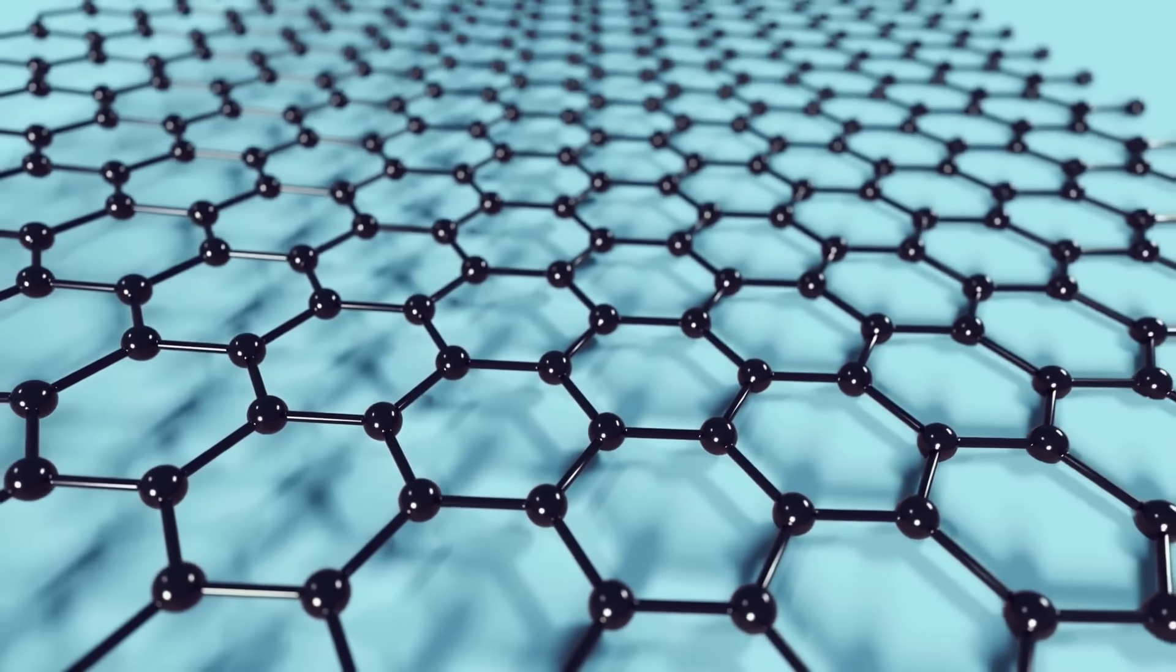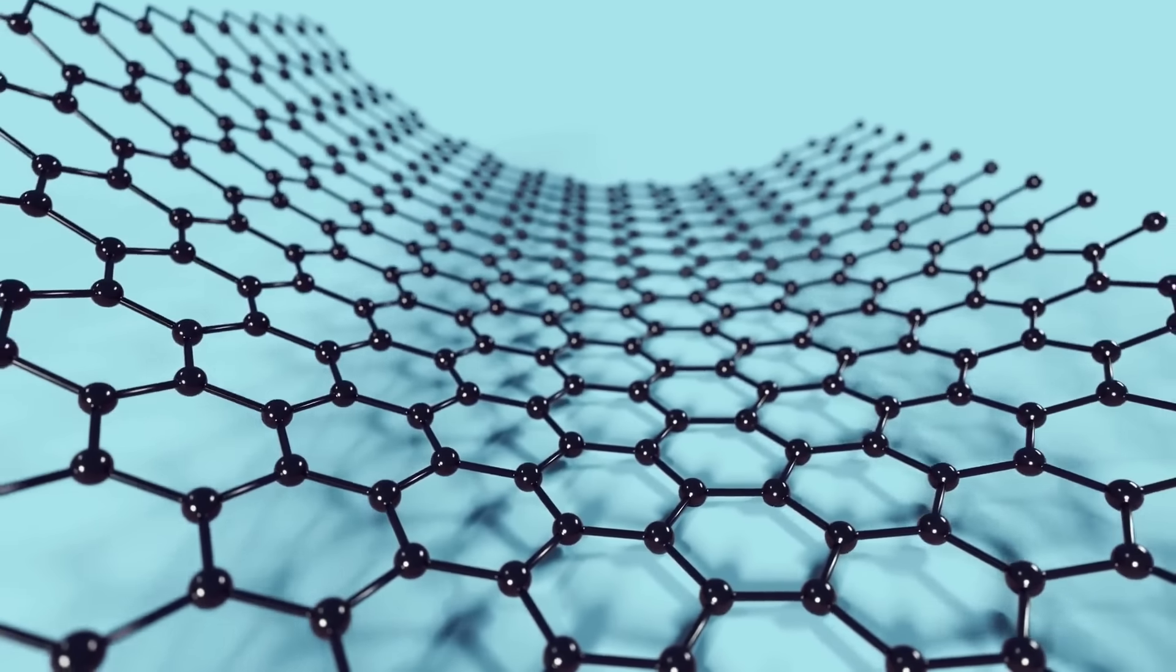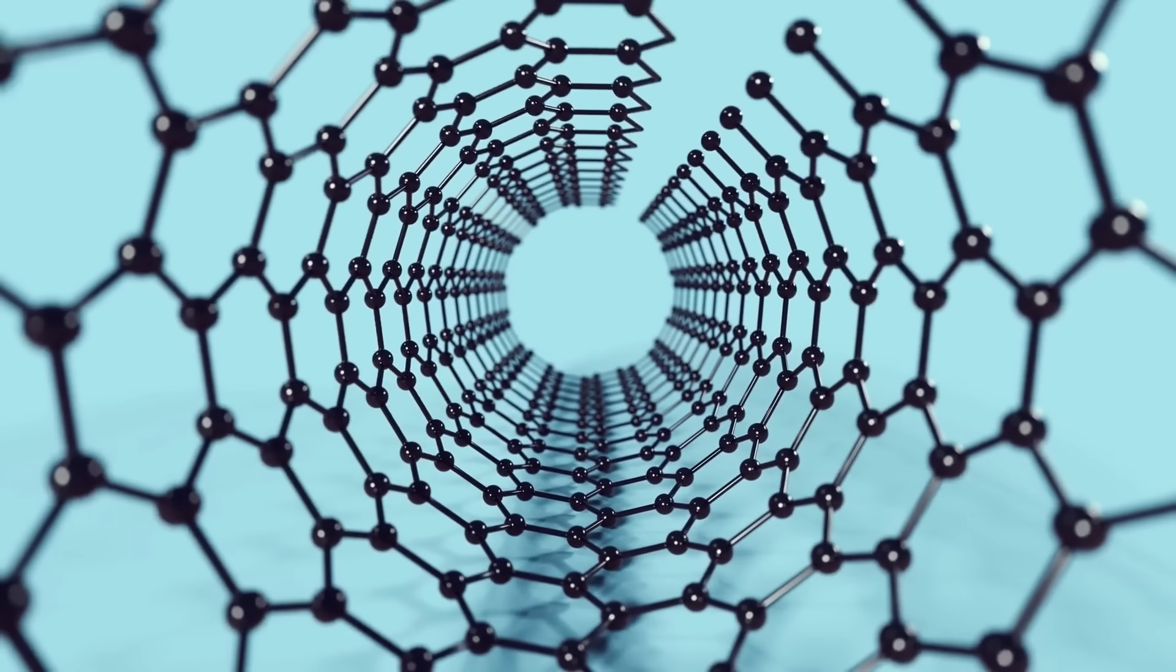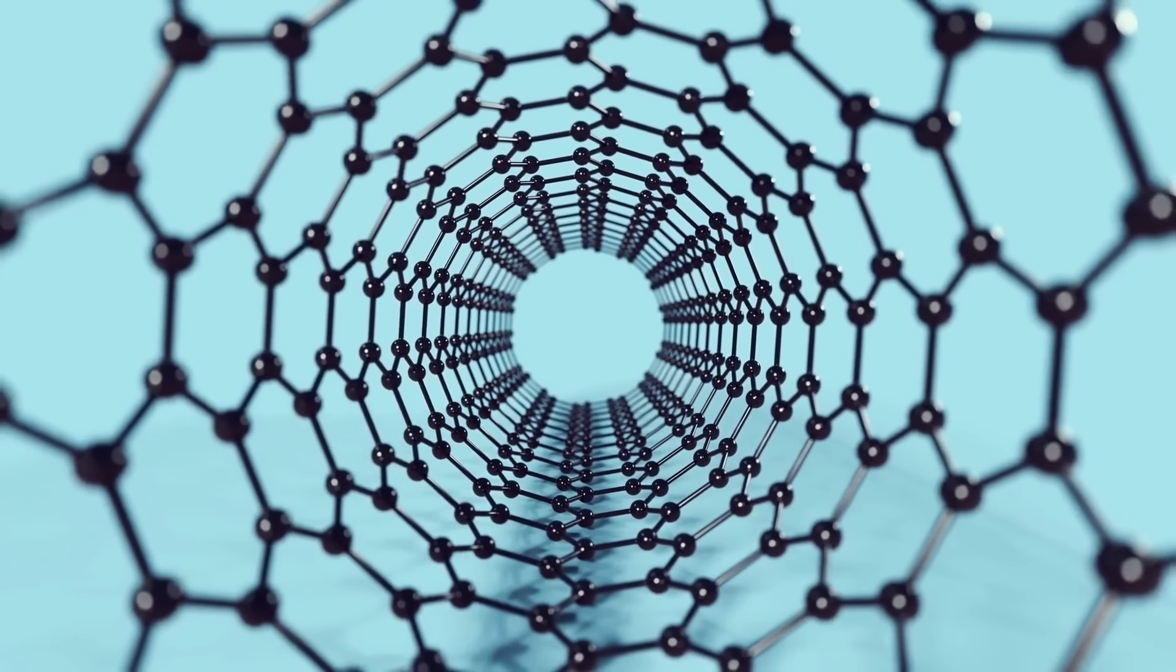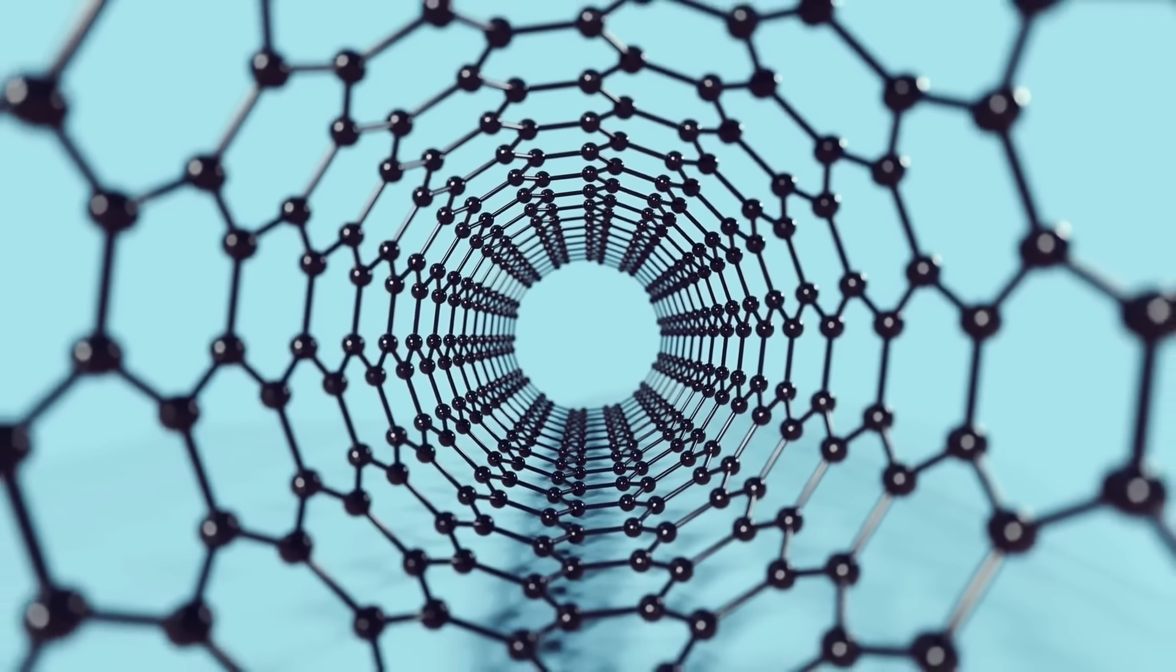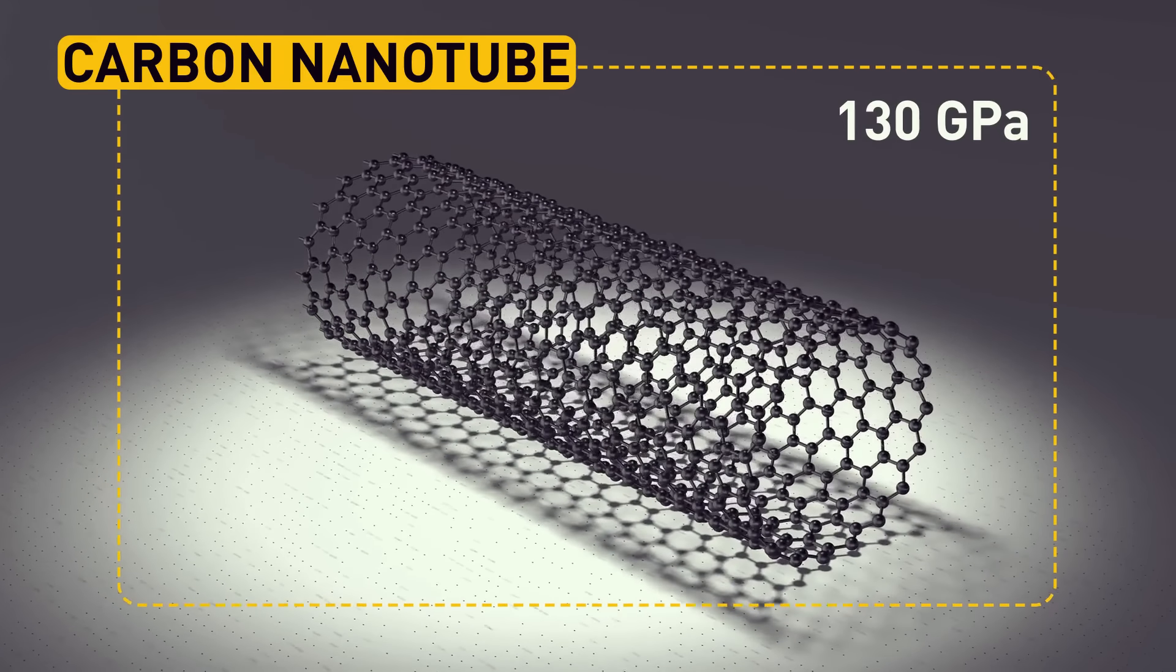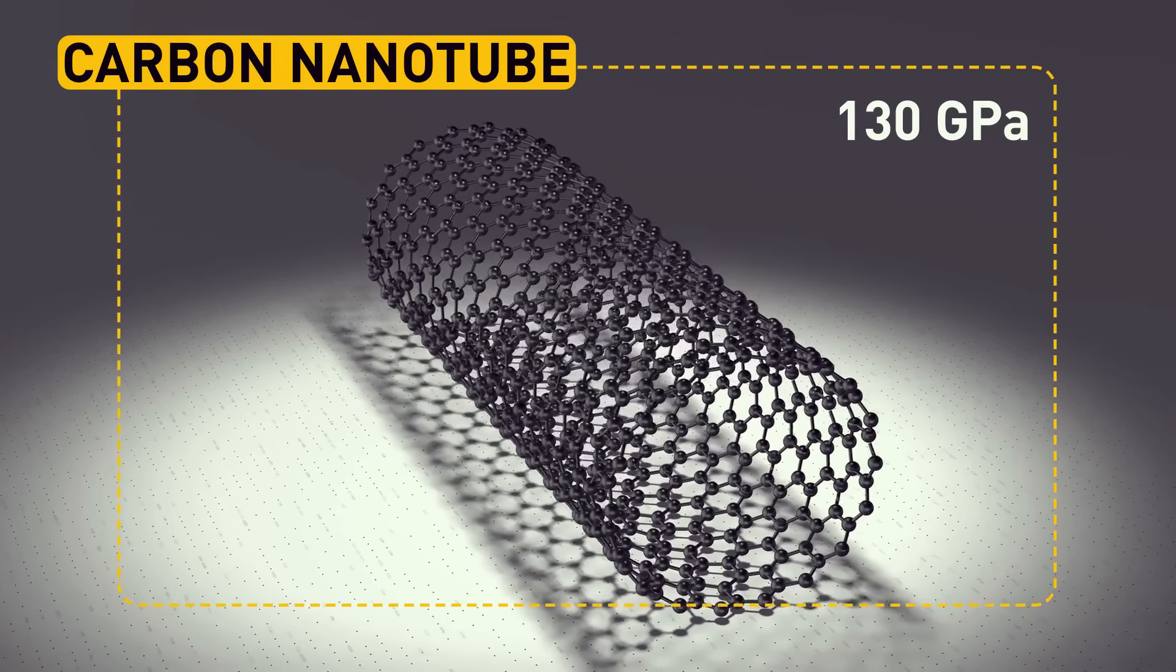If only we had some magically light material with a power of 60 gigapascals, which would have a taper ratio of 1.6. Oh, wait! We actually do have this unique material. It's called carbon nanotube. It has a strength of 130 gigapascals, which is much more than we need.